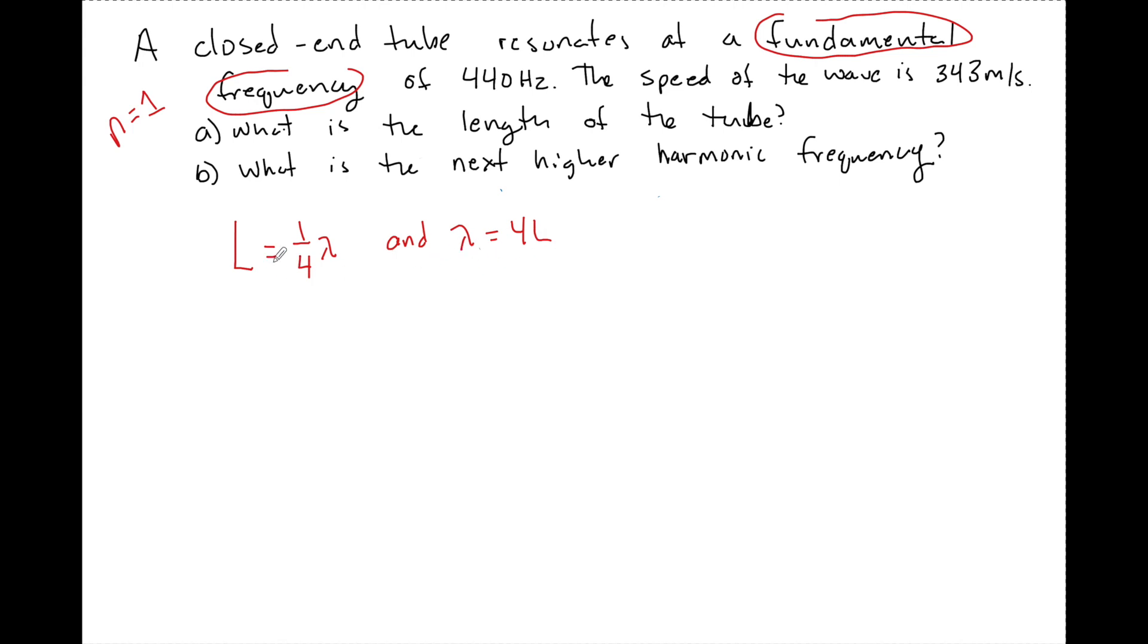We can't use this formula to find L because we don't know wavelength. But we do know from our reference table that frequency equals V over lambda. We can use the frequency to say that V over 4L could then help us find the length L equals V over 4F. When we substitute in, 343 meters per second divided by 4 times 440, the L for this tube is going to be 0.195 meters long.